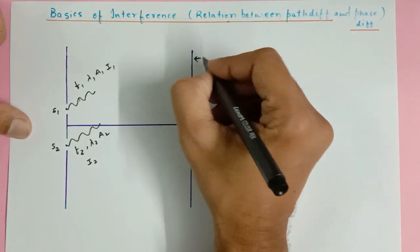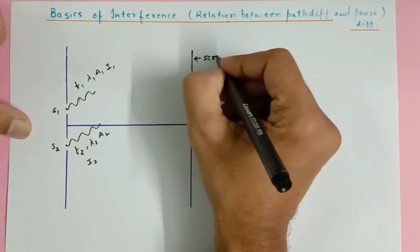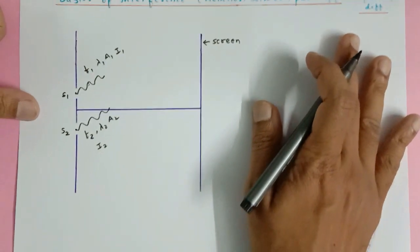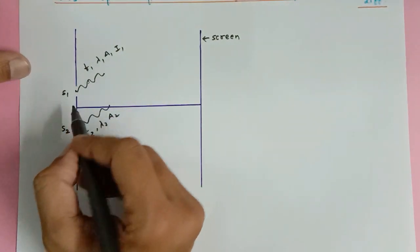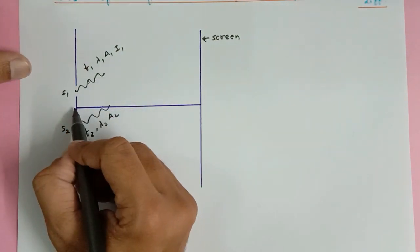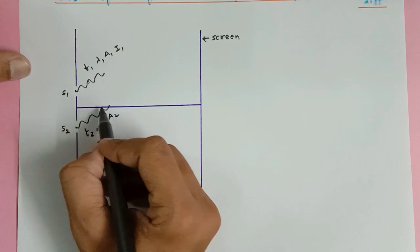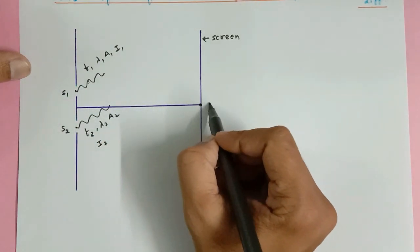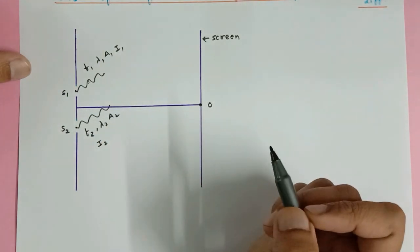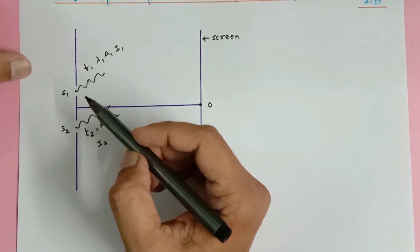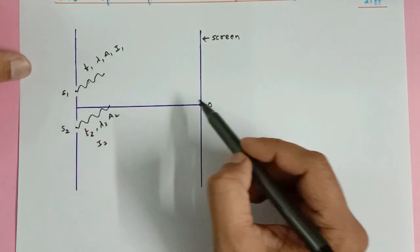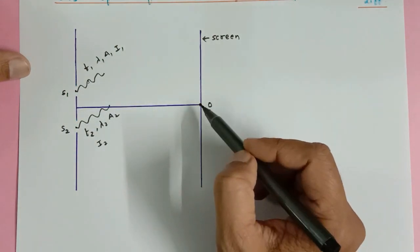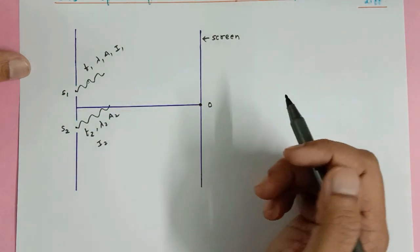This is the screen. If I find the midpoint and draw the perpendicular bisector from S1 and S2, it meets the screen at a point called the center of the screen. Wherever the S1–S2 perpendicular bisector meets the screen, that is called the center of the screen.